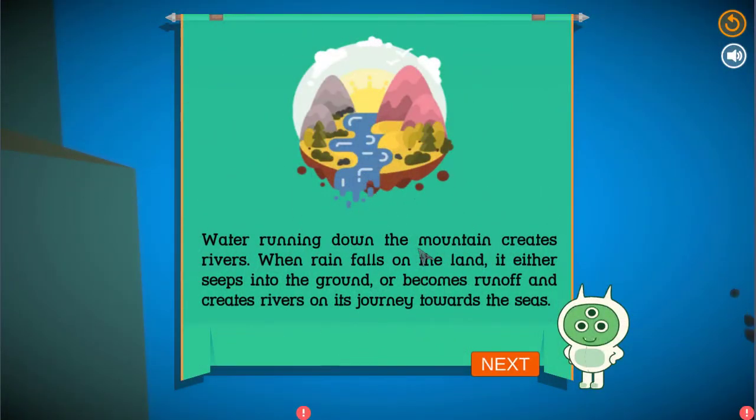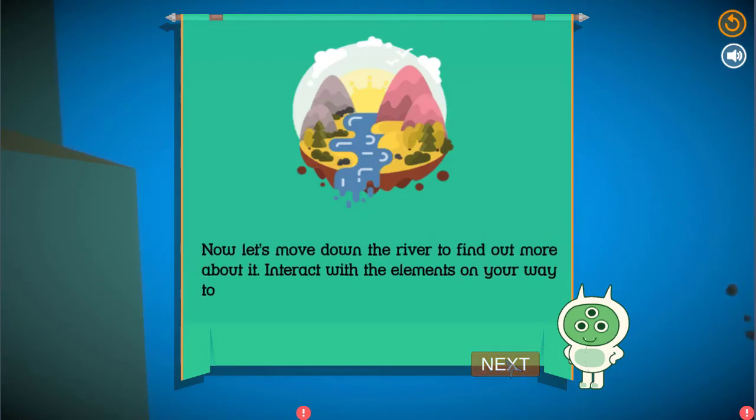Water running down the mountain creates rivers. When rain falls on the land, it either seeps into the ground, or becomes runoff and creates rivers on its journey towards the seas. Now let's move down the river to find out more about it. Interact with the elements on your way to collect more information about them.